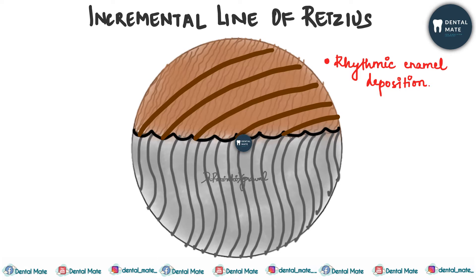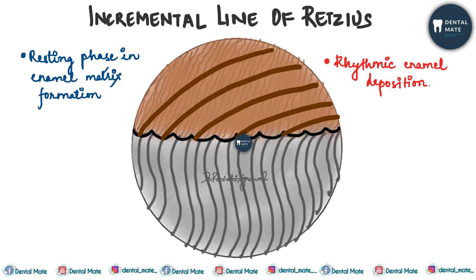These represent the rhythmic deposition of enamel — that is, the successive apposition of layers of enamel during crown formation. Along with that, they demarcate a resting phase in the enamel matrix formation. When the enamel matrix is being laid down, there are certain cyclic disturbances in the enamel formation which occur every seven to eight days, and this is what the incremental lines of Retzius represent.